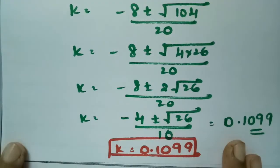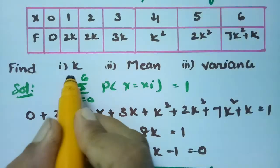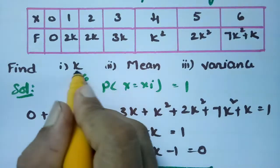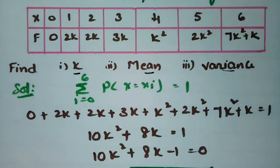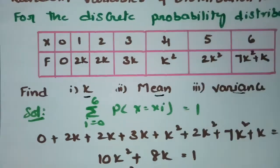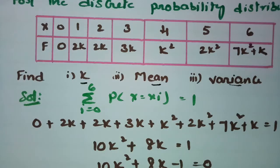So this is how we find the value of k, mean, and variance. Have a look at this video one more time if you don't understand, and the calculation part you can do on your own using your calculator. Thank you so much.